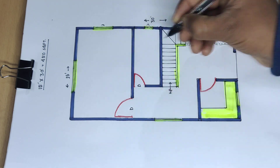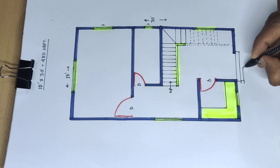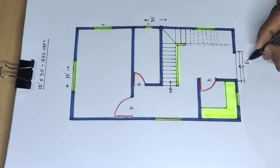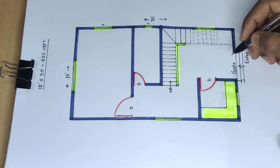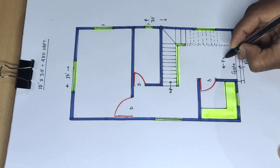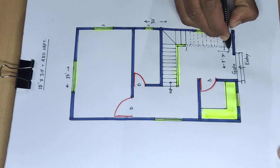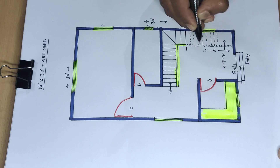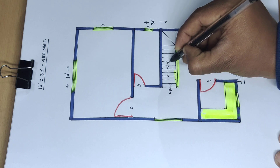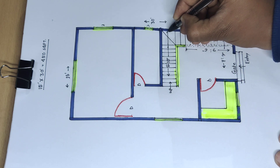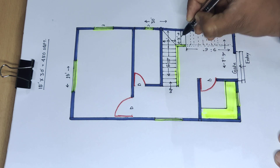And now door. Entry gate 7 feet 9 inch and 9 feet 6 inch distance. And 8 feet 10 inch distance, 3 feet wide.